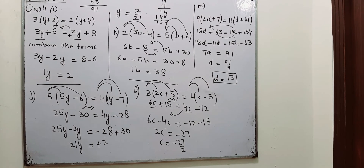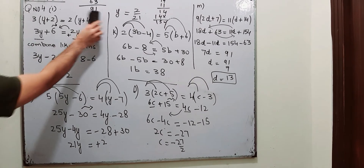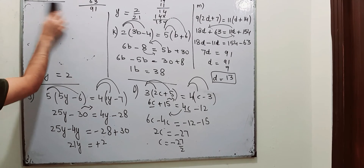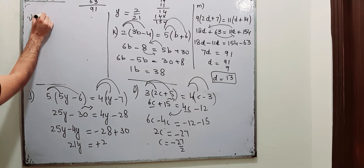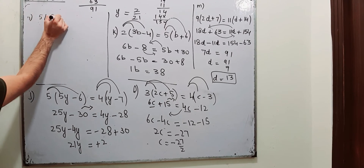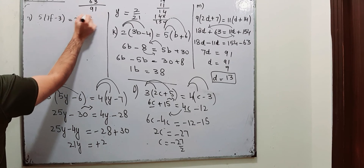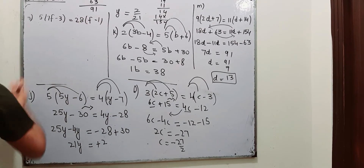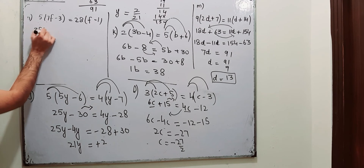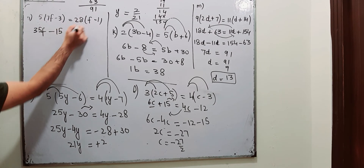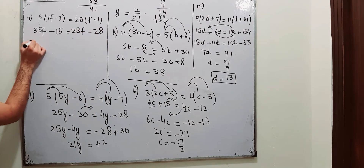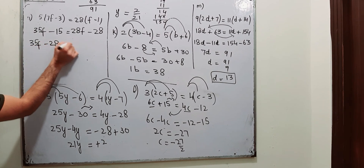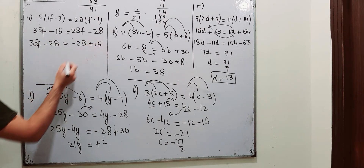The last part for this question is part number n. That says 5 into 7f minus 3 is equal to 28 into f minus 1. Open the bracket: 5 into 7 is 35f, 5 into 3 is 15. 28 into f is 28f, 28 into 1 is 28. Combine the like terms — terms involving f on the left side, numbers on the right side, and change the respective signs.